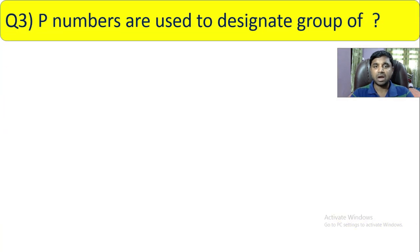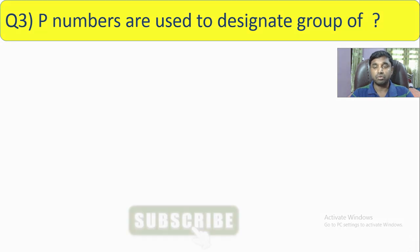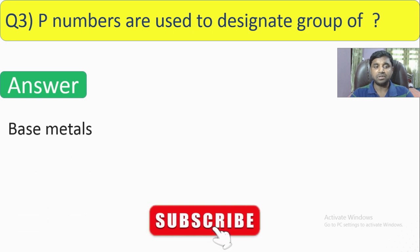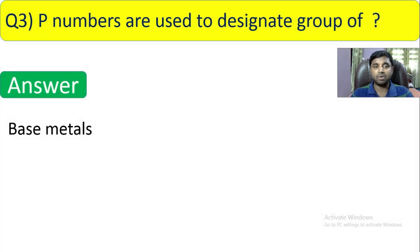Question number 3: P numbers are used to designate a group of what? The answer is base metal. We use the P number to designate the group of base metal.